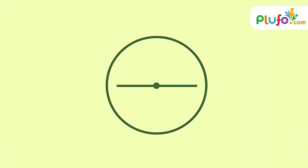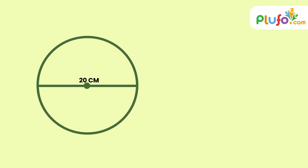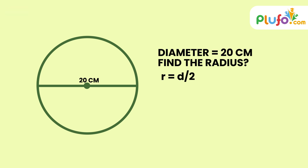Let us work out an example. Here is a circle having a diameter of 20 centimeters. We need to find the radius. So radius is equal to diameter divided by 2.